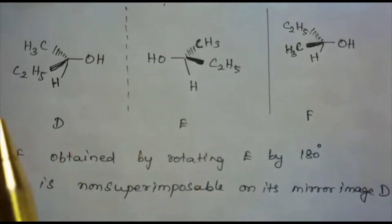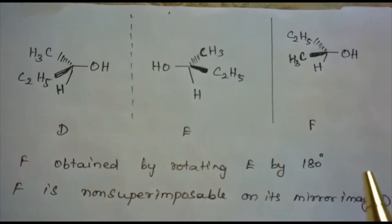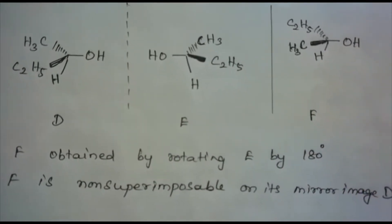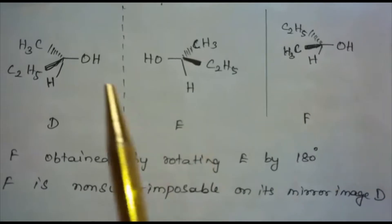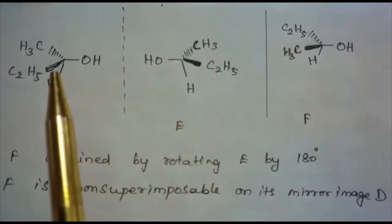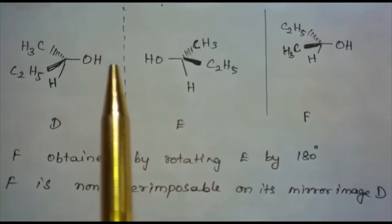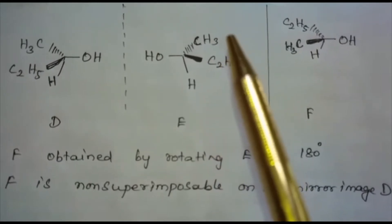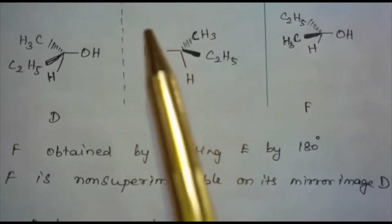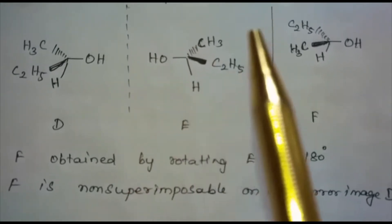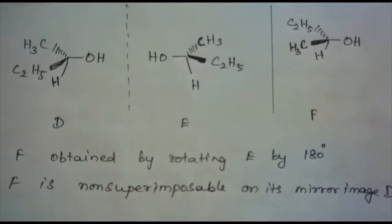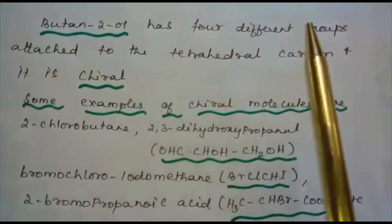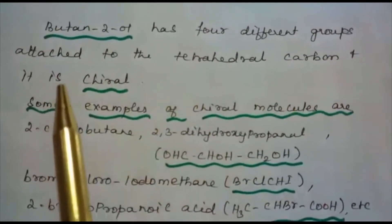Now consider butane-2-ol. Structure F is obtained by rotating structure E by 180 degrees, and F is non-superimposable on its mirror image D. In propane-2-ol, the same group CH₃ appeared twice, whereas in butane-2-ol, there are four different groups: CH₃, C₂H₅, H, and OH. Therefore, butane-2-ol has four different groups attached to the tetrahedral carbon and it is a chiral molecule.